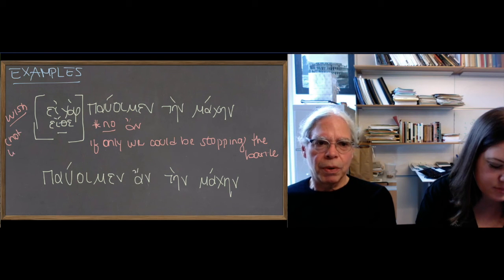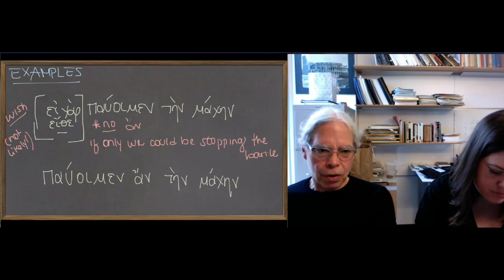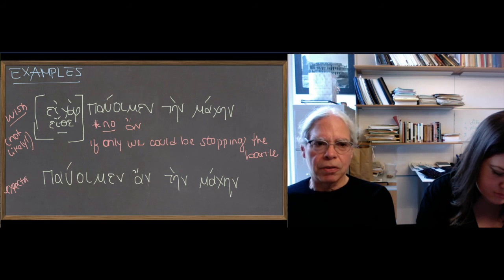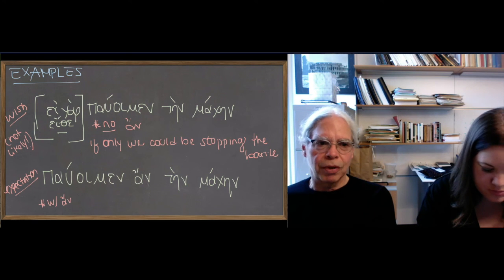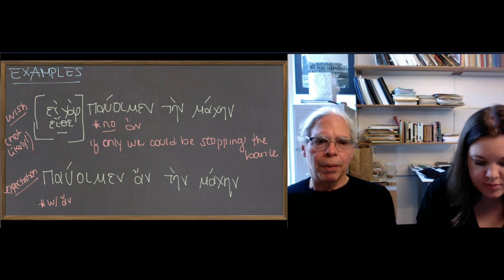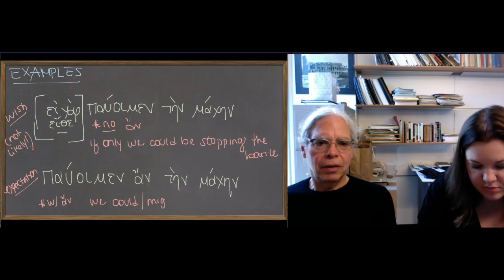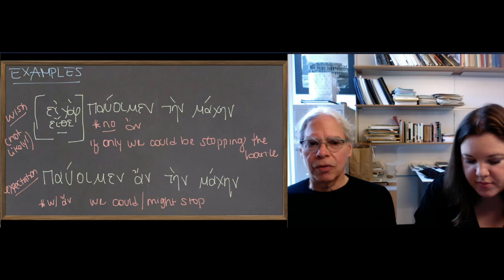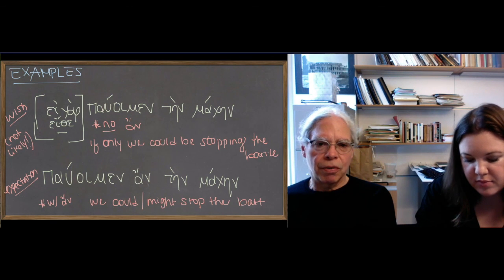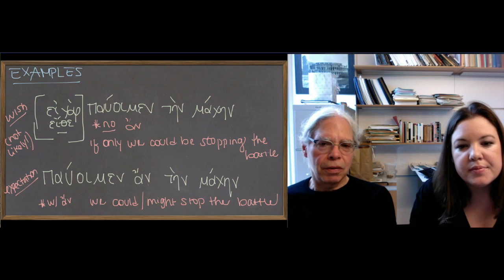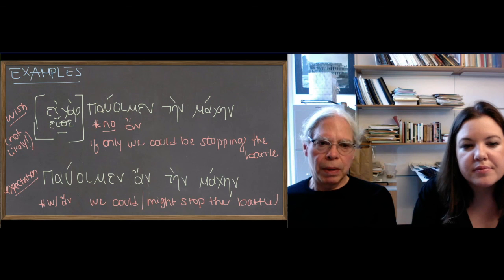The second example is the same sentence but with 'an,' where you're expressing an expectation. That means 'we could be stopping the battle' or 'we might be stopping the battle.' The words 'might' or 'could' are what the book uses, but the basic idea is you're talking about what you expect to happen: 'we could stop the battle,' 'we might stop the battle.' So it's a binary thing: the presence or absence of 'an.' You already have an example in 'pauo'imetha' as the conclusion of a future less vivid condition.